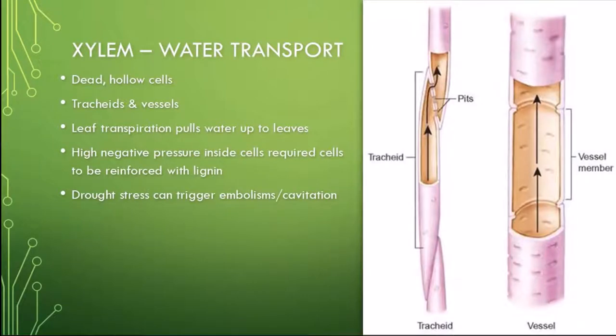Xylem cells are dead cells, having undergone programmed cell death as they mature after cell division to form a continuous network of hollow xylem. There are two types of xylem cells, called tracheids and vessels.